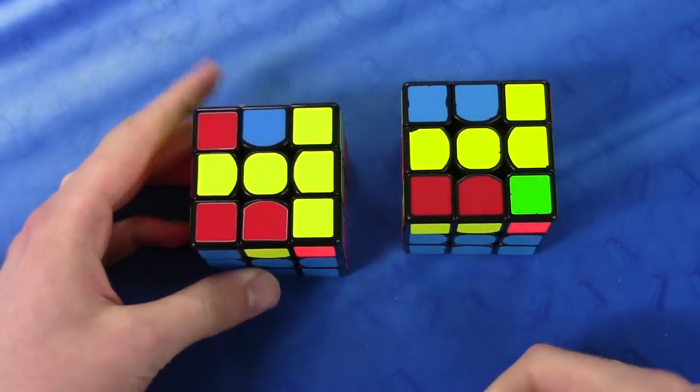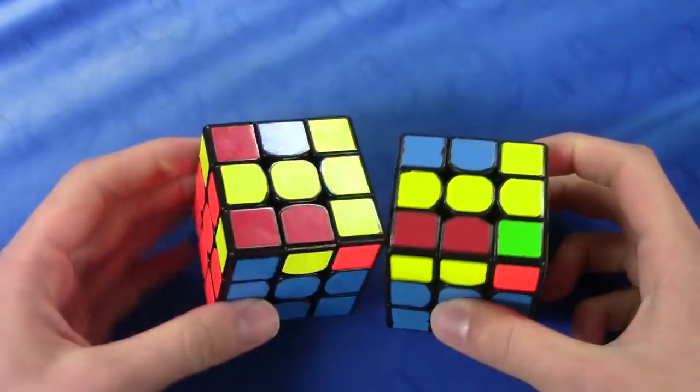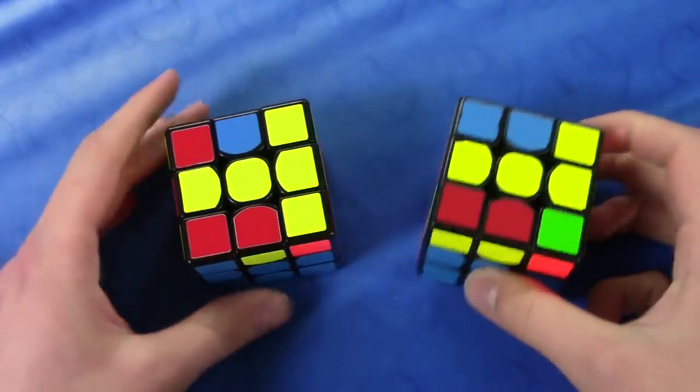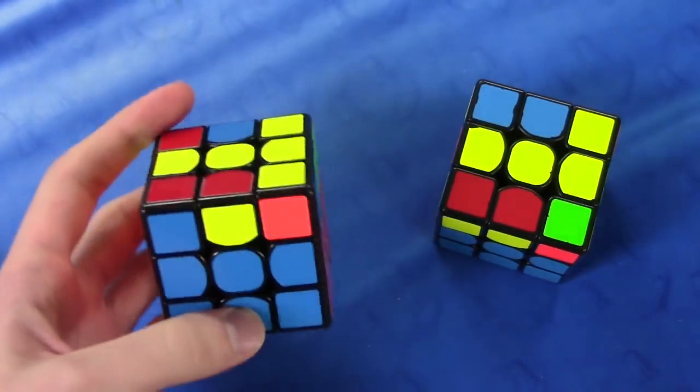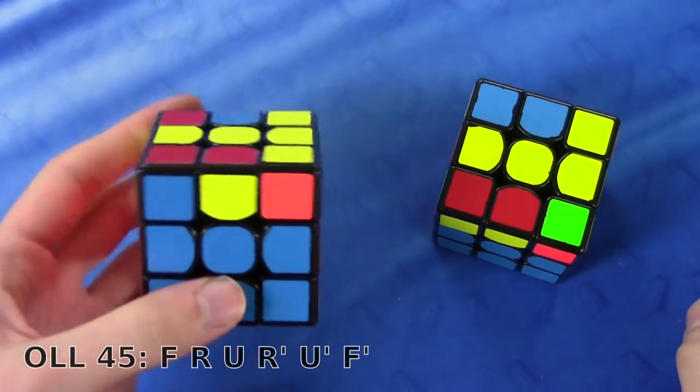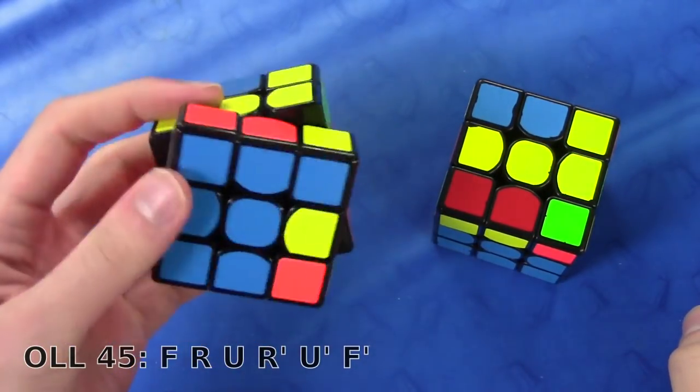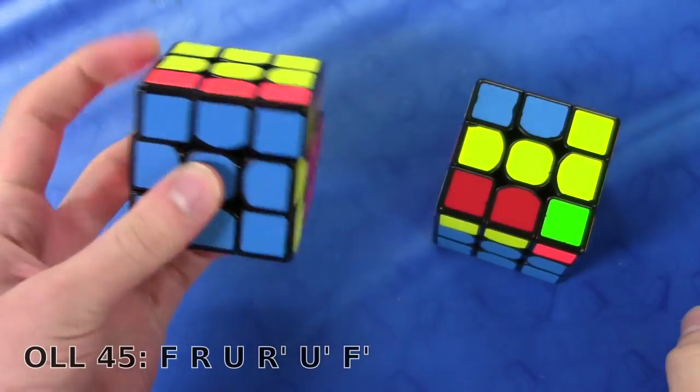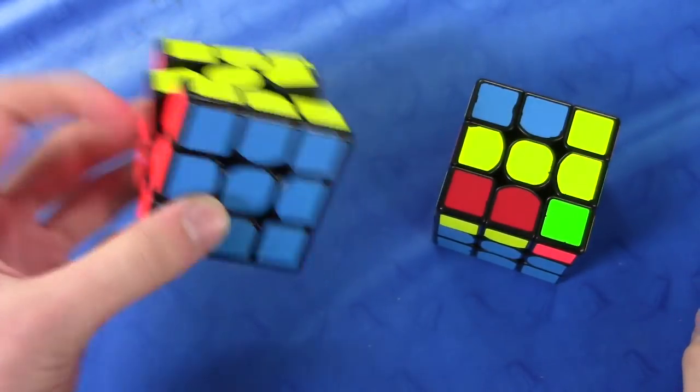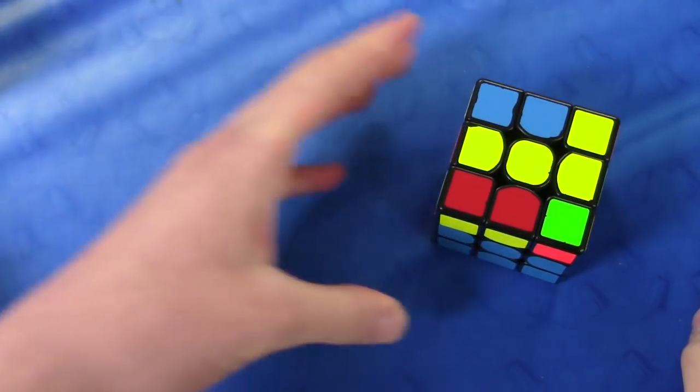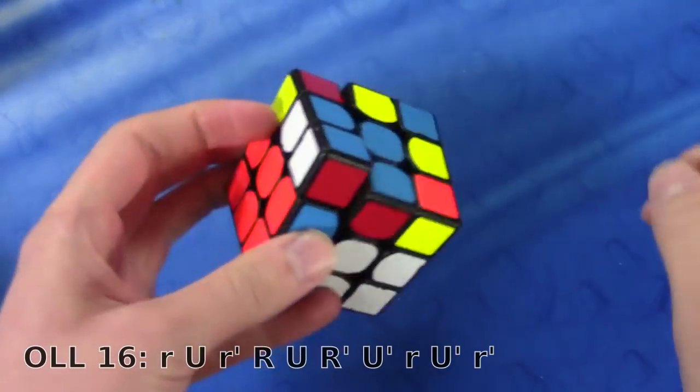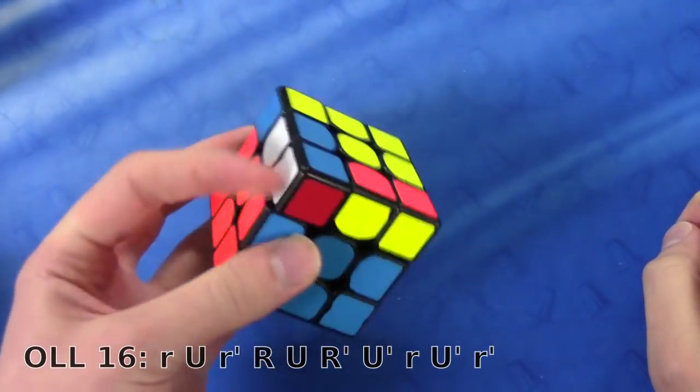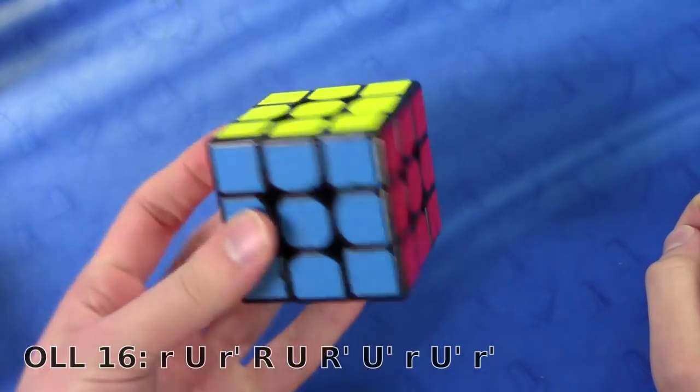Now there are two different algs which I recommend you use. One of them is very simple but it requires F moves, so if you're not comfortable with that then you can go ahead and use the other one. The first one is simply F sexy move F prime, and the second one basically you take a wide pair out like this, you do sexy move, and then you put the wide pair back in.